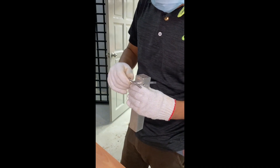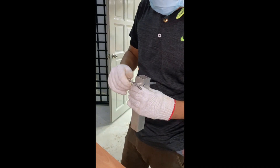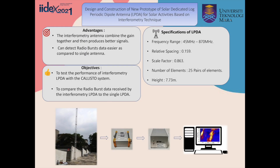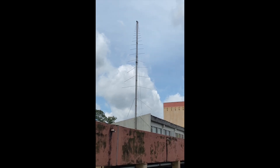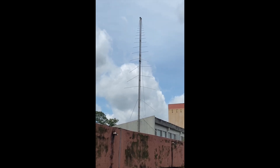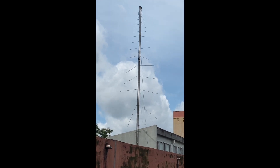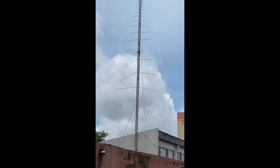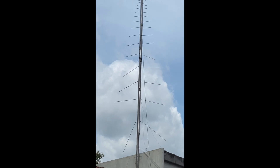This antenna is suitable for use in radio astronomy because it was designed to operate over a wide band of frequencies. For our antenna, it operates at a frequency range of 45 MHz to 870 MHz. The antenna consists of a series of dipole elements positioned along a support boom lying along the antenna axis, and has a tapered shape where the size decreases gradually from the bottom to the top.